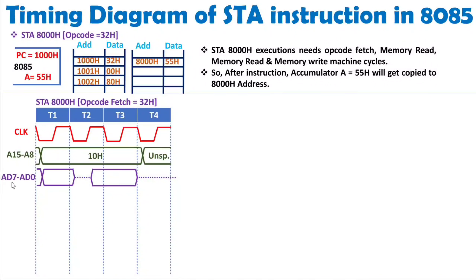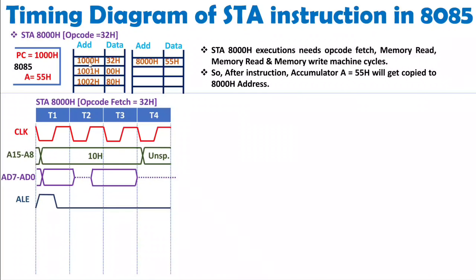The lower byte of address is time-multiplexed with data on AD0–AD7. To separate address from data, we observe the Address Latch Enable (ALE) signal. When ALE goes active high, it indicates there are addresses on AD0–AD7. The positive-going pulse of ALE marks this. ALE then goes active low, so only during T1 will there be an address on AD0–AD7. The lower byte of address for opcode fetch is 00h.